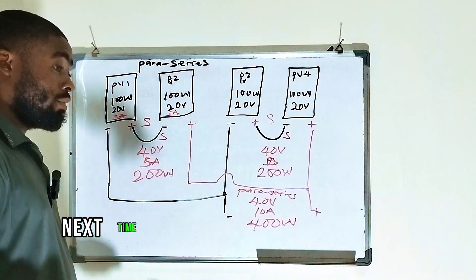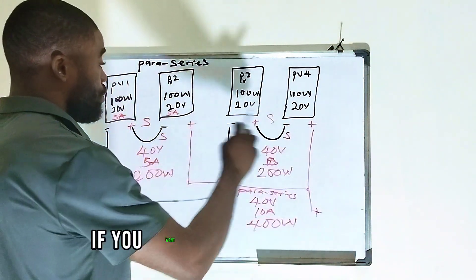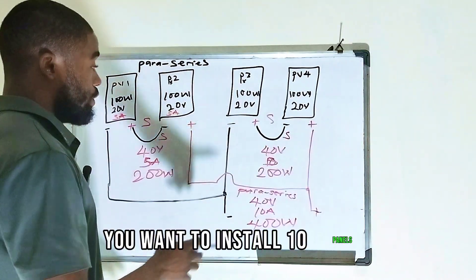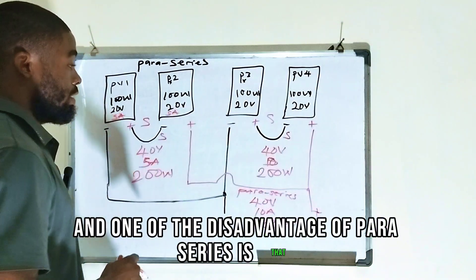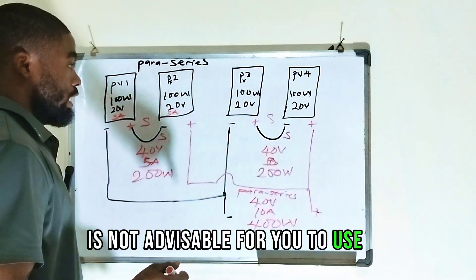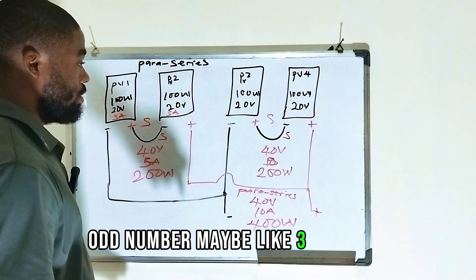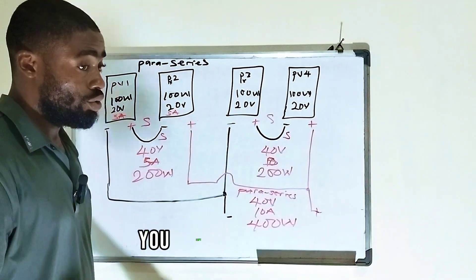So Collins, next time, don't come and say you don't understand what we did. It's very simple. If you want to install 6 panels, you want to install 8 panels, you want to install 10 panels, this is how you do it. And one of the disadvantages of Paraseries is that it's not advisable for you to use an odd number. Odd number.